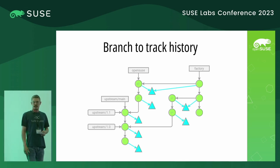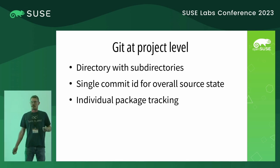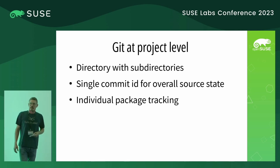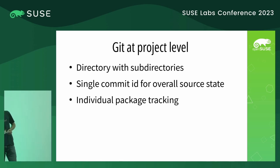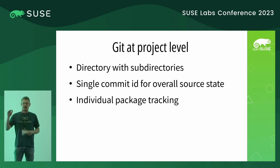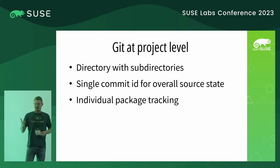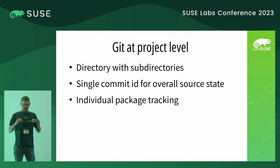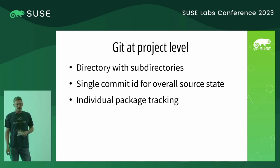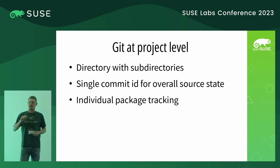That's the model for a single package. Now could we do the same for a whole project? A project is a directory with sub-directories, where the sub-directories are packages. What we want is a single commit ID for the overall source state of the project — something OBS doesn't offer right now. For example, when a staging with 100 packages is checked in, they all end up as individual commits in factory, but you can't ever roll back a staging. With Git we could have one single commit that defines the set of packages at that moment in time, while still being able to track individual packages.